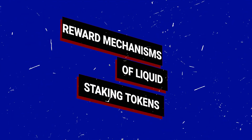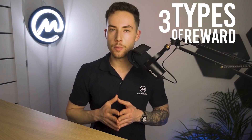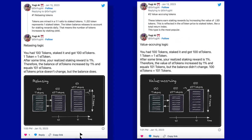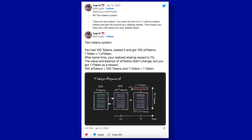Before diving into the protocol comparison, you should know about the three types of reward mechanisms. Rebasing tokens increase in amount with the yield — you get 1 staked ETH for 1 ETH, and as your ETH balance increases, so does your staked ETH balance. Value accruing tokens increase in price with the yield — your staked ETH balance stays the same but increases in value. The two-token system keeps the principal the same, and staking rewards are paid out in a separate reward token with the same price as ETH, so 1% yield results in 0.01 reward tokens.